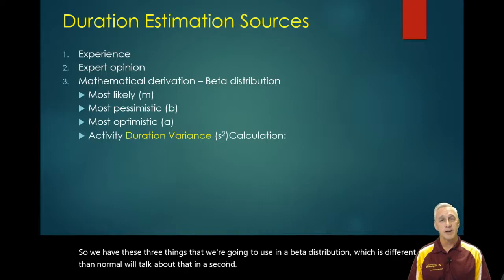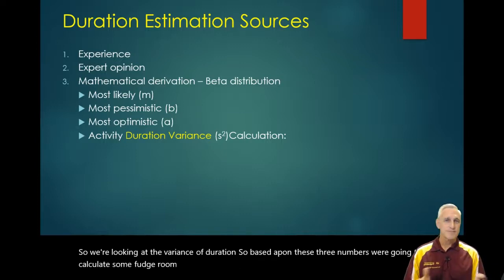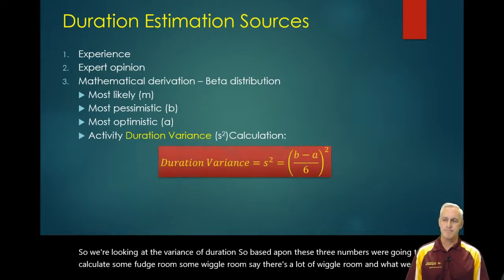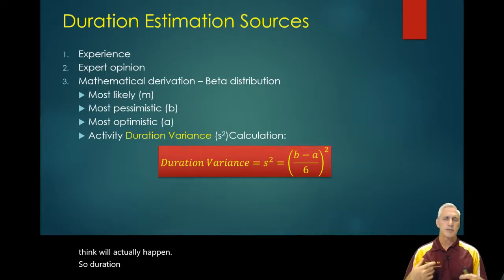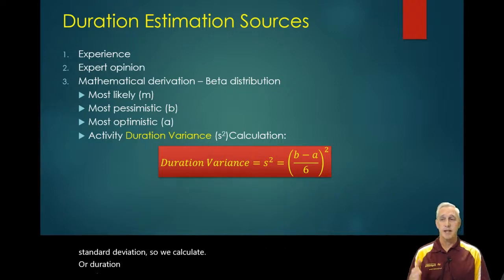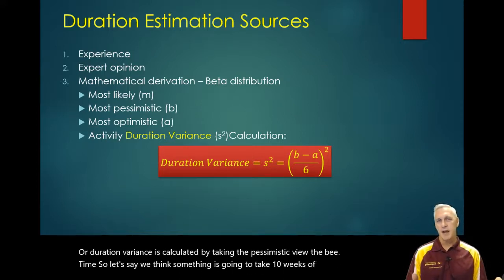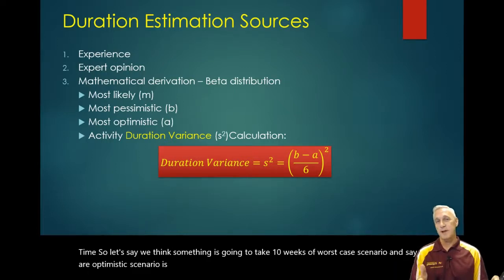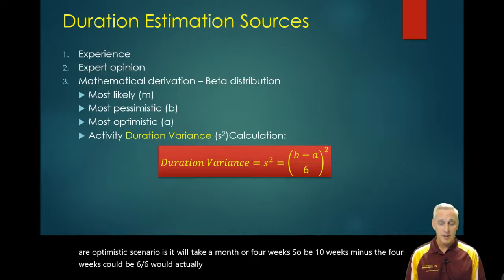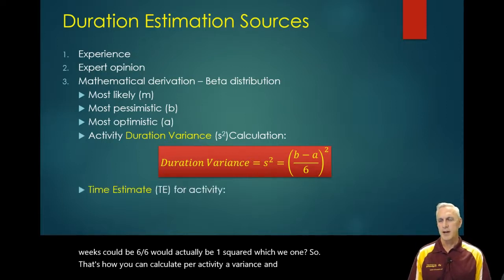We're also looking at the variance of duration. Based upon these three numbers, we're going to calculate some wiggle room. Duration variance is really the square of the standard deviation, and this is for a sample standard deviation. Duration variance is calculated by taking the pessimistic value — say 10 weeks worst case — minus the optimistic, say four weeks. So 10 minus 4 equals 6, divided by 6 equals 1, squared equals 1. That's how you calculate a variance per activity.